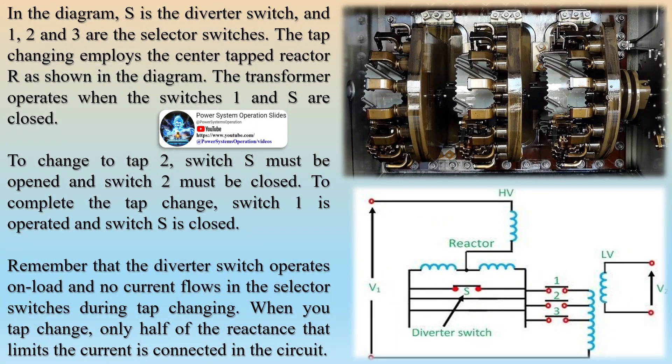Off-load tap changers are also used in high voltage transformers. The system of such transformers includes a no-load tap changer on the primary winding to accommodate variations within a narrow band around the nominal rating. In such systems, tap changing is often done only once at the time of installation, but can also be changed during a scheduled outage to address any long-term change in the system's voltage profile.